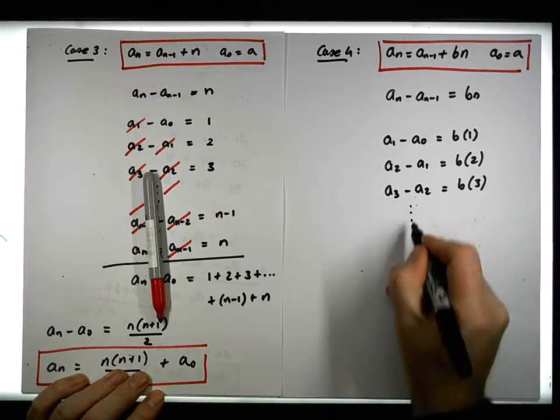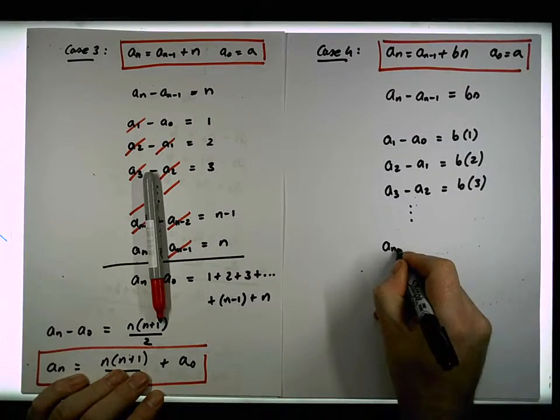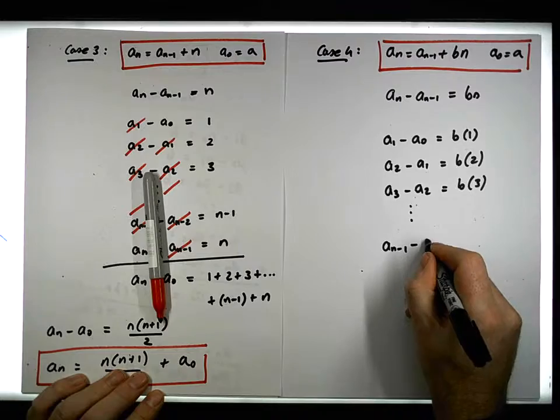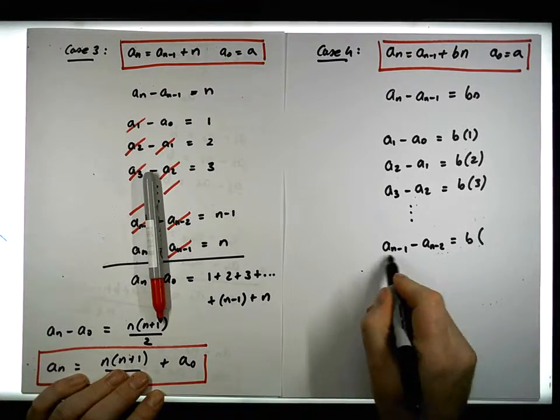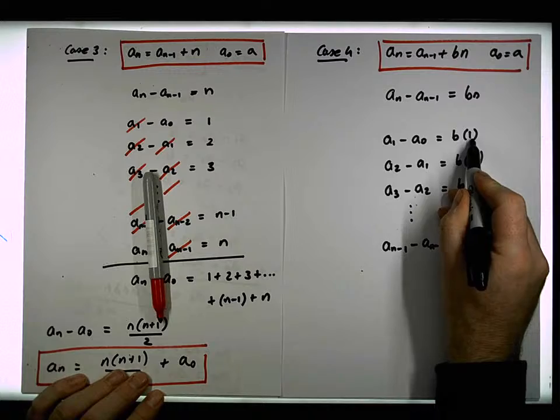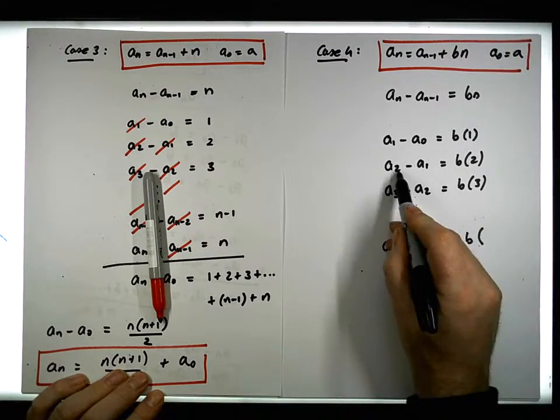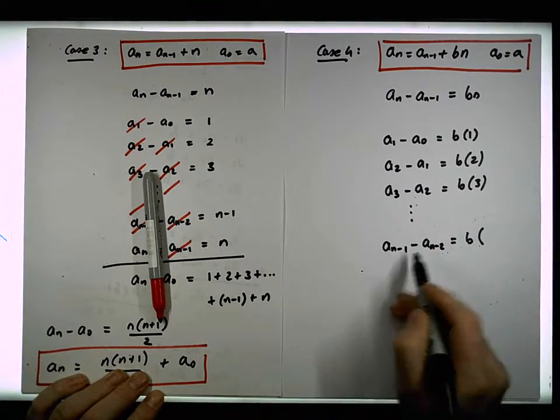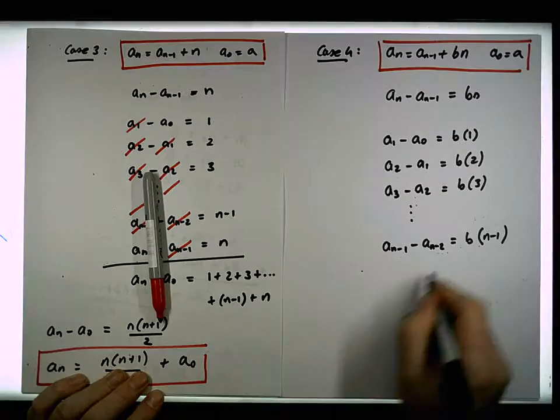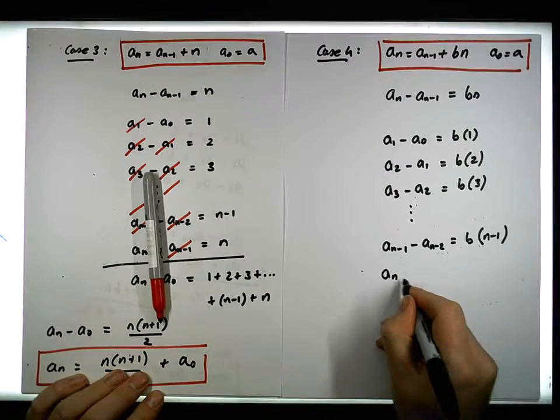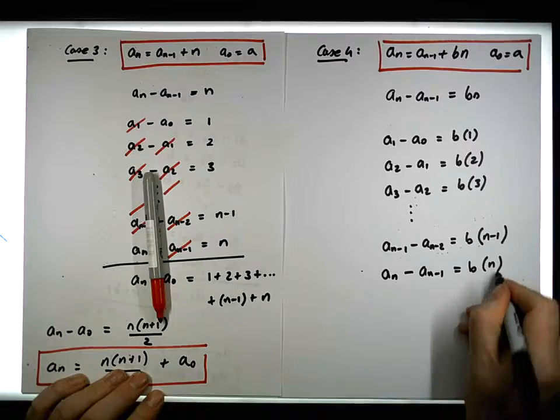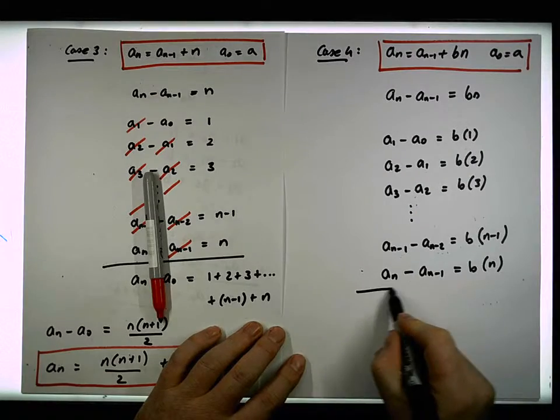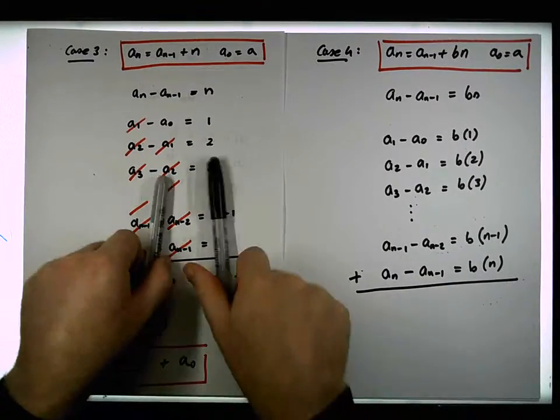And if we iterate down, the an minus 1 term minus the one before, an minus 2, must be equal to b times n. Once again, now we try to sum these up.